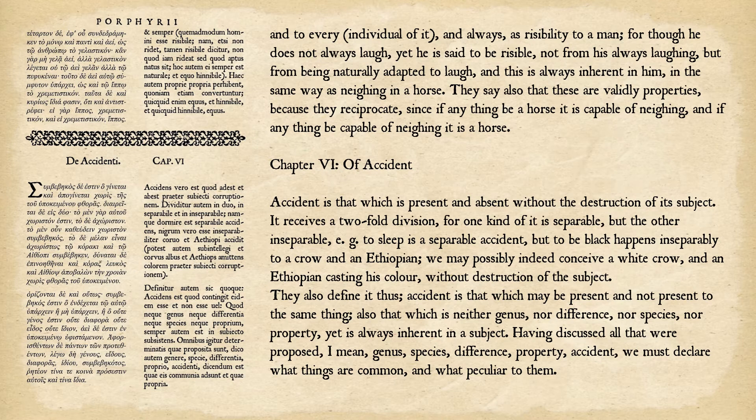Though a man does not always laugh, yet he is said to be risible not from always laughing, but from being naturally adapted to laugh, and this is always inherent in him, in the same way as neighing in a horse. These are validly properties because they reciprocate: if anything be a horse, it is capable of neighing, and if anything be capable of neighing, it is a horse.